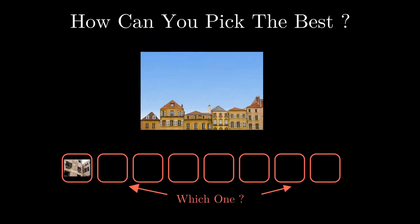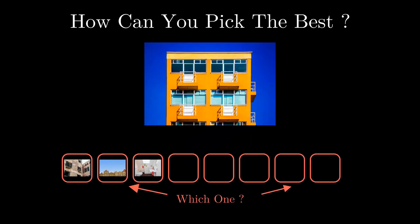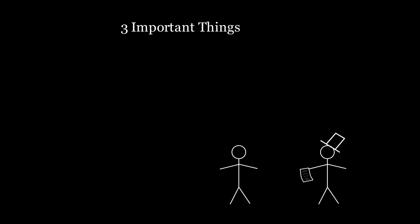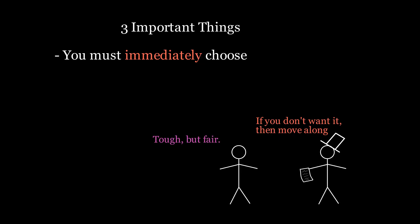Let's say you have a series of apartments you're looking at. You want to pick the best one. How can you do that? Well, there are three important things in this problem. First, you have to immediately decide on the apartment once you see it. You can't see a bunch of them and then go back and pick the one you like the best. As soon as you see the apartment, you either take it or someone else gets it.